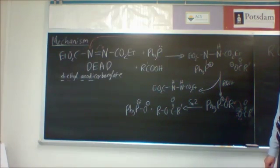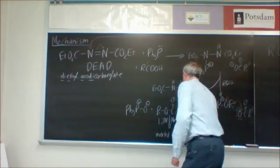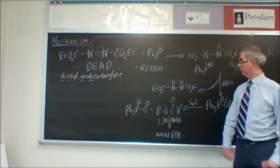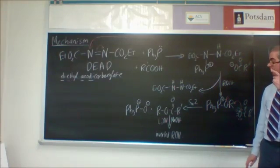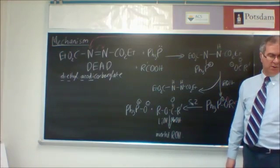So we get our ester product and triphenyl phosphine oxide. And if we choose to hydrolyze this, we get ROH back again, but the R-center has been inverted.